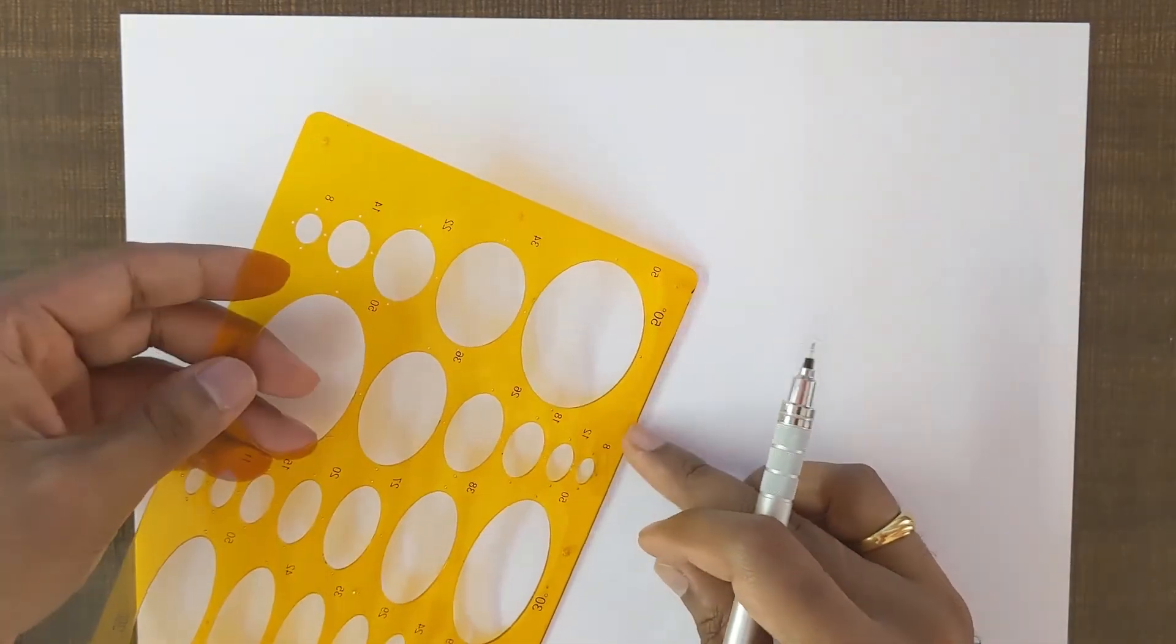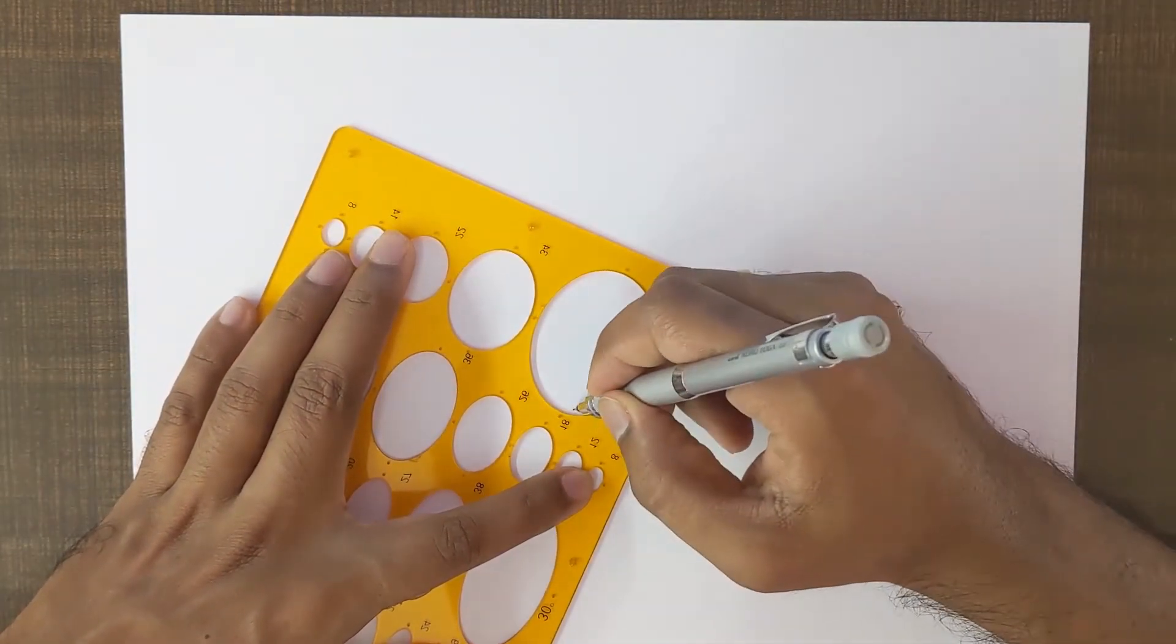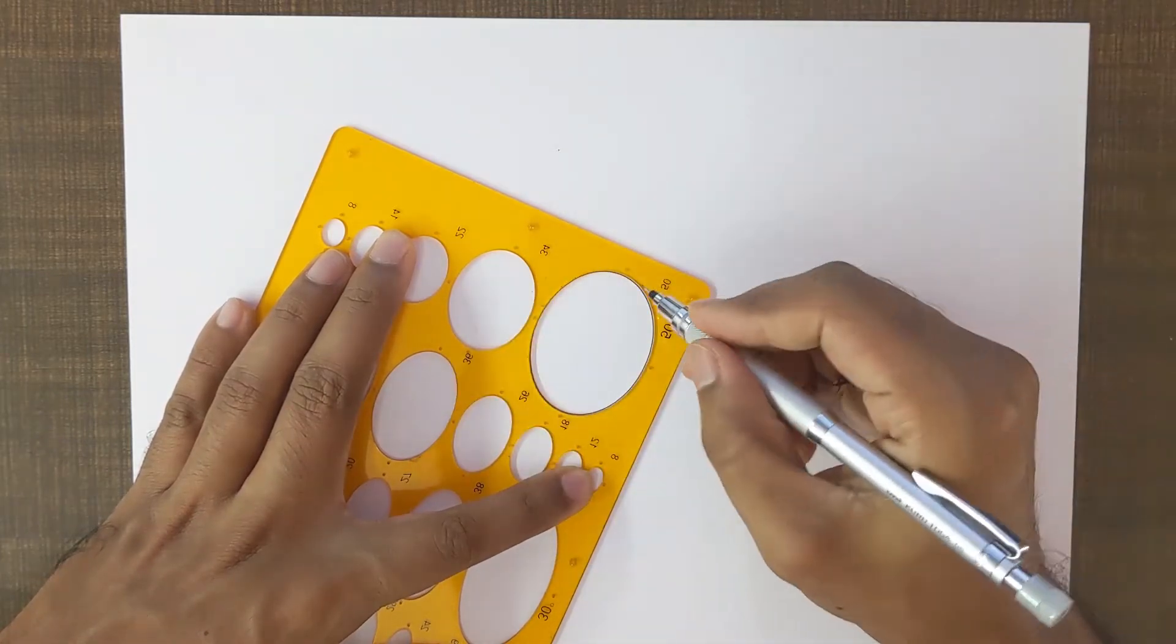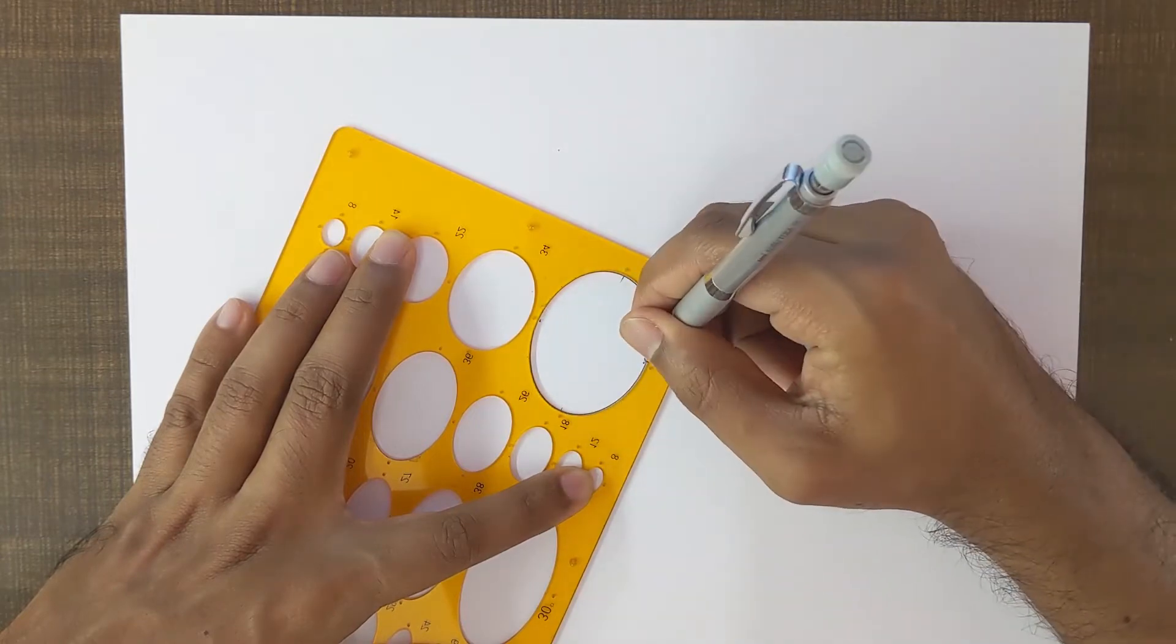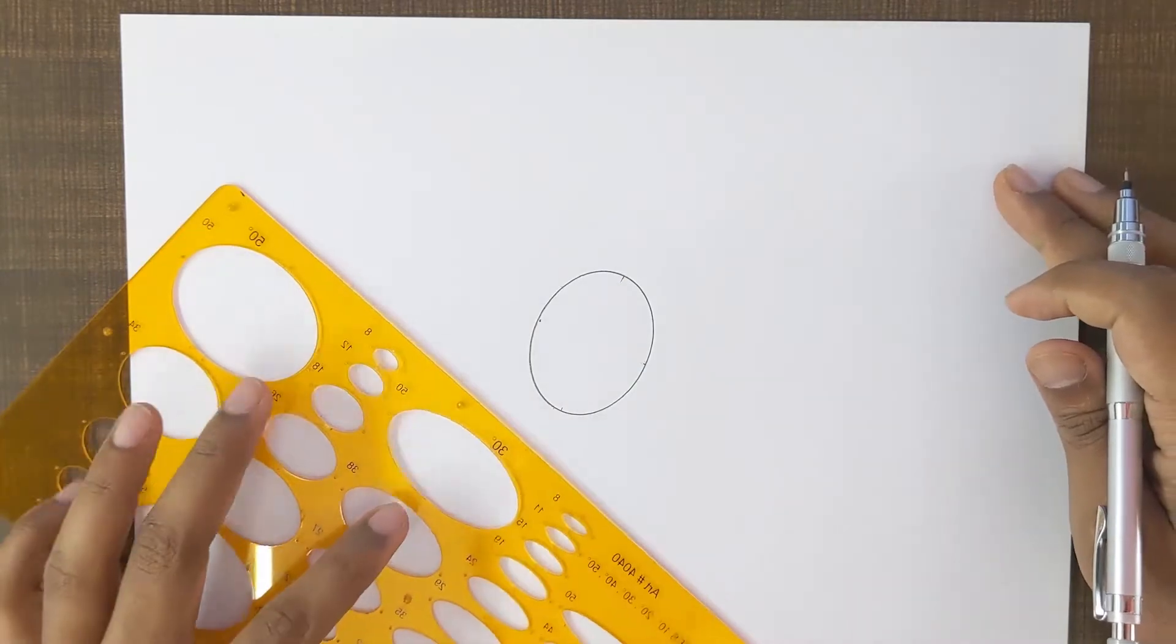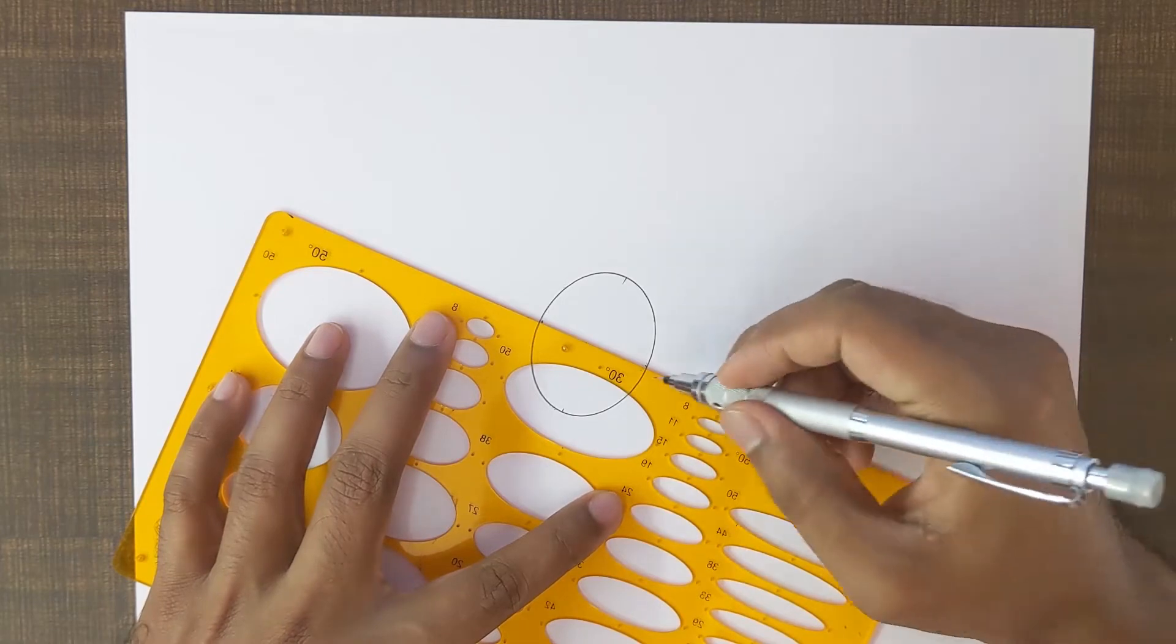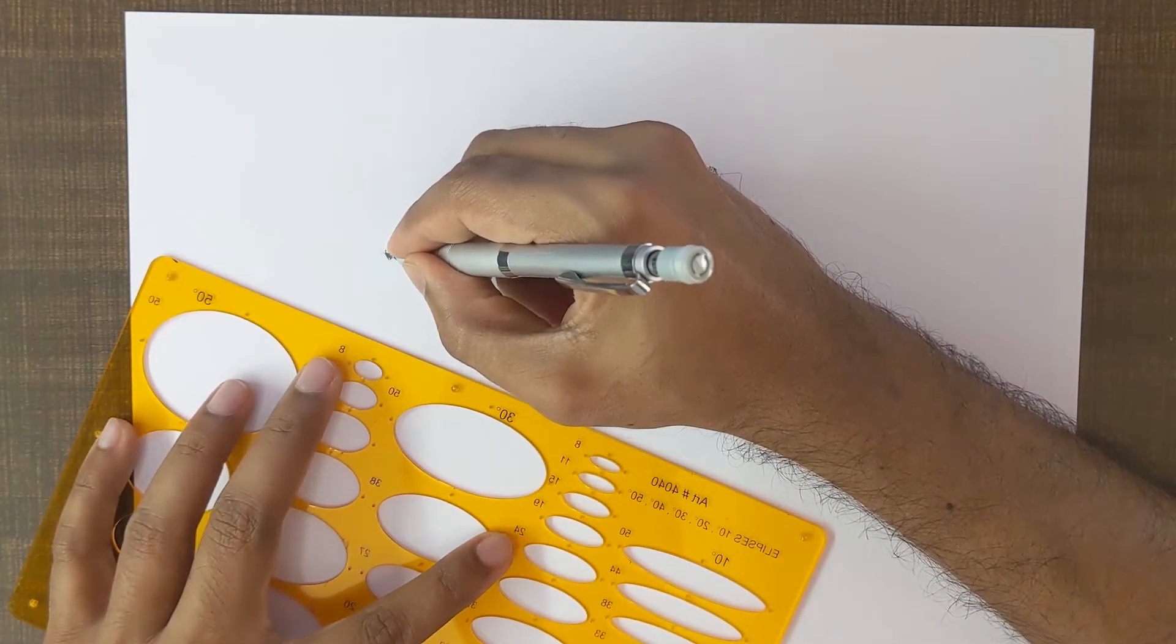This is a 50 degree ellipse and I'll just draw a nice ellipse at the center of the page like this. So once we have it, I'll just go ahead and mark the major axis and the minor axis. Okay, so we do know that the minor axis of the ellipse always goes to the left vanishing point.